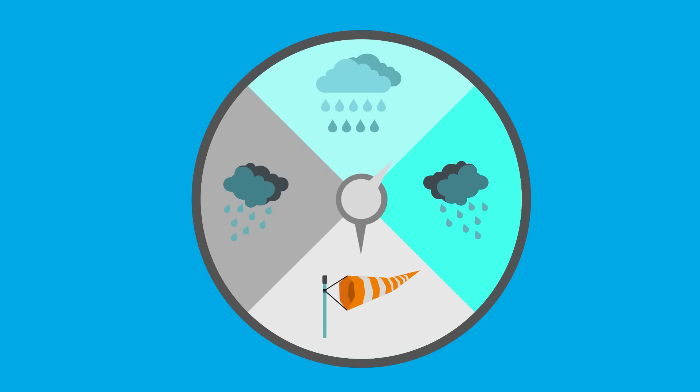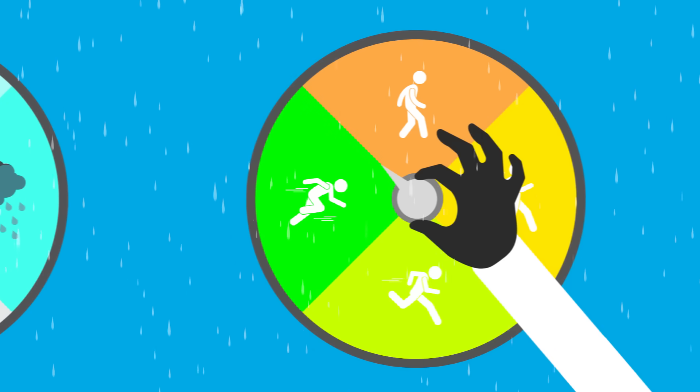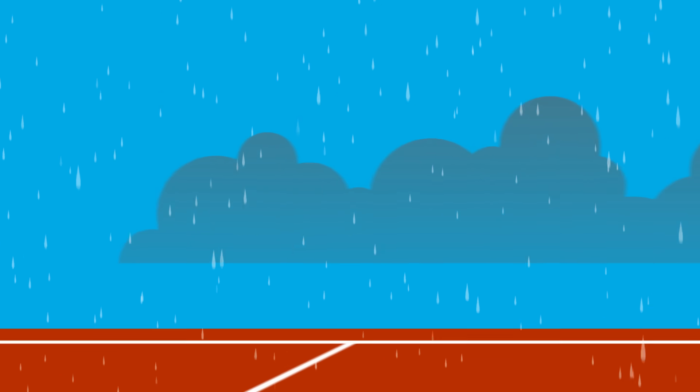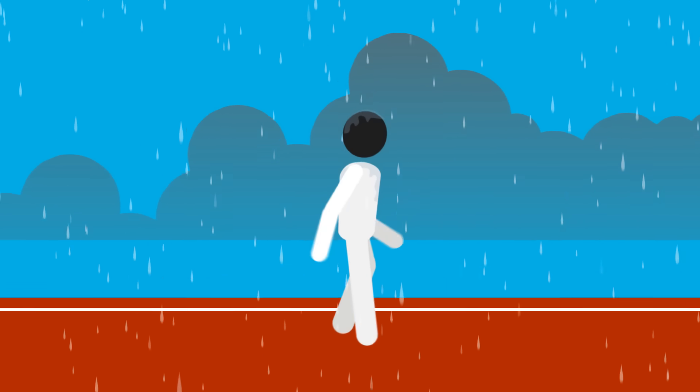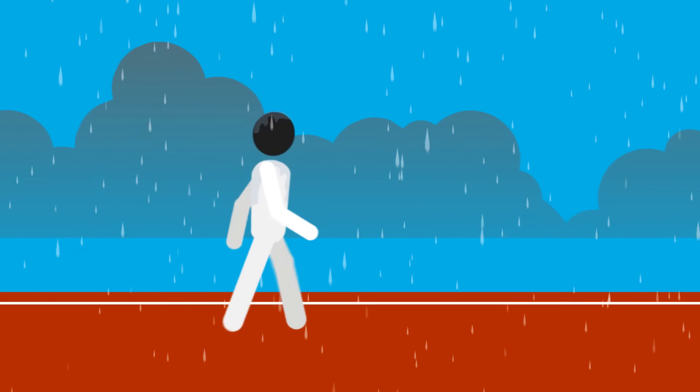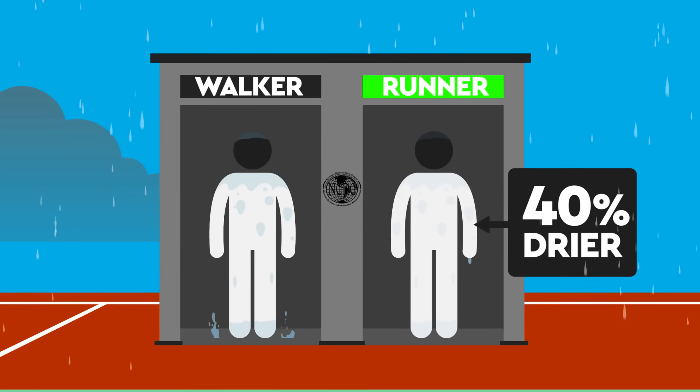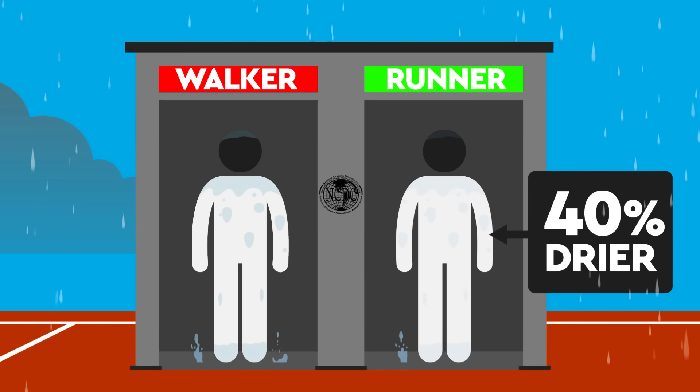Using themselves as test subjects, one of the intrepid researchers walked through a 100-meter track while being rained on, while the other academic ran. When their relative wetness was assessed, they found that the runner was 40% drier than the walker, a difference that might actually justify the effort it takes to speed up.